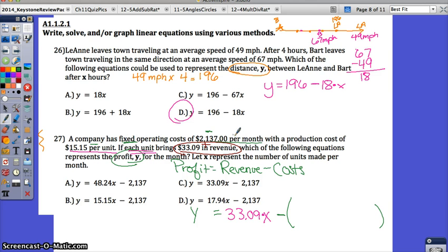There were two costs given to you. There's a fixed cost, which is just once per month. Since this equation represents the profit for the month, this doesn't need to be multiplied by anything. It's just a fixed amount. Anytime you have a fixed amount, it should stand alone as a constant. But we're also going to have to pay out the $15.15 per unit, so $15.15 times X. You could also write this just as minus $2,137 minus $15.15X. That's the same thing.